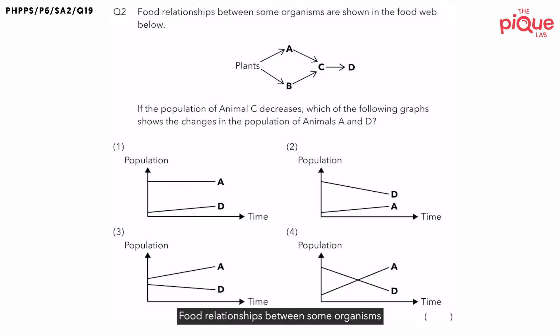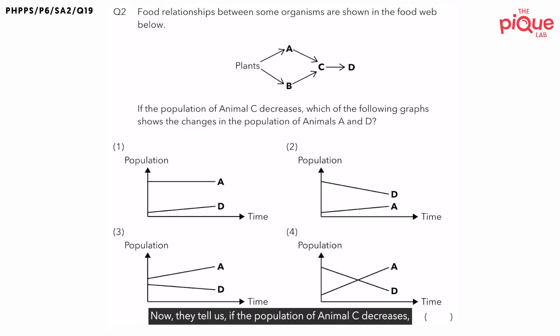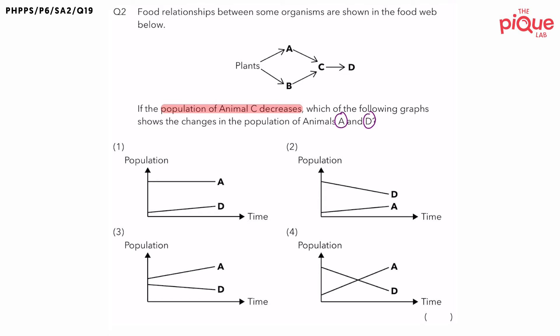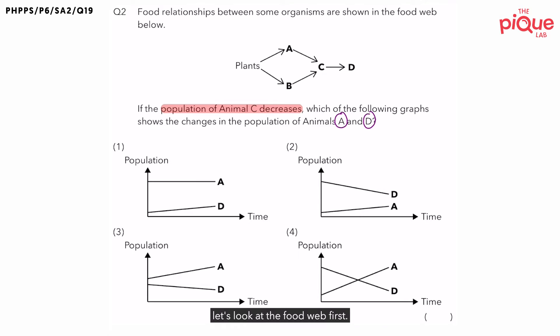Question two: food relationships between some organisms are shown in the food web below. They tell us if the population of animals C decreases, and they want us to find out which of the following graphs will show the changes in the population of animals A and D. Now before we take a look at this question, let's look at the food web first.